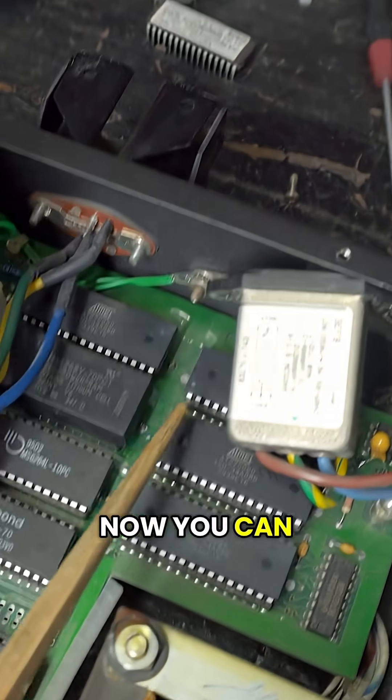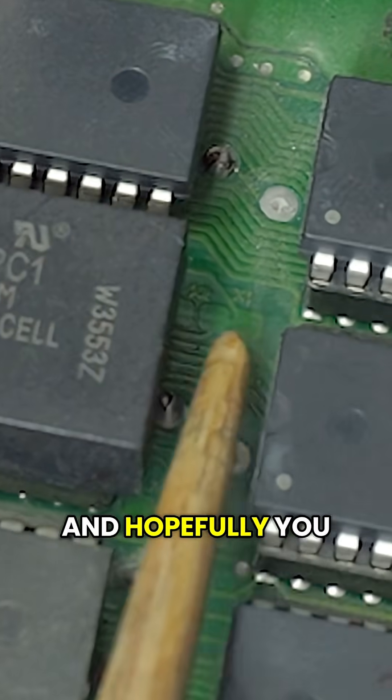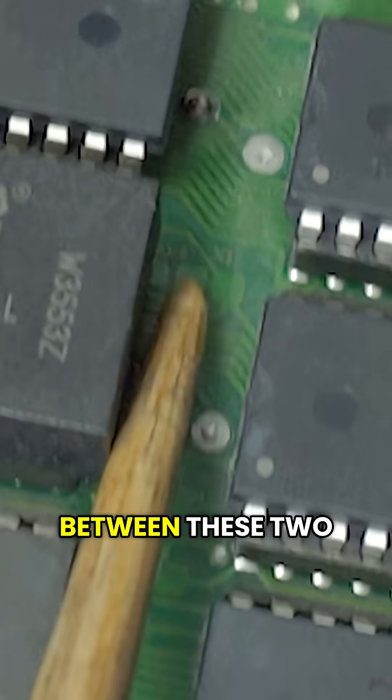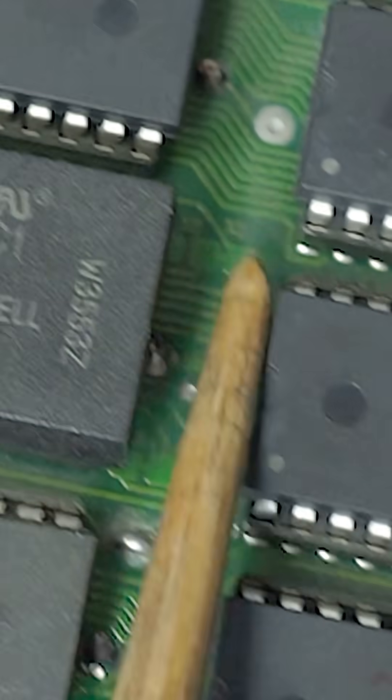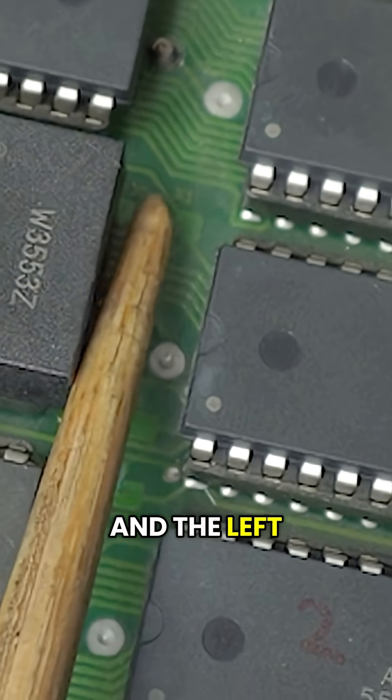Now you can see there's three green squares, and hopefully you can see there's a line, a green line between these two squares. That indicates that the middle pad is connected to the right-hand pad and the left-hand pad is not.